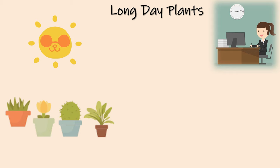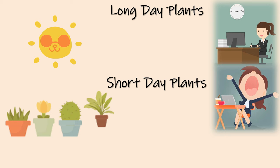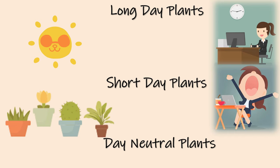The length of the critical period varies between species and plants. Thus we can classify plants based on their photoperiodism as: long day plants, which like to work for a long day; short day plants, that like to wrap up their work quickly and take a long break; and day neutral plants, who are unaffected by their photoperiodism.